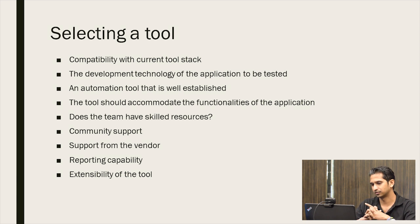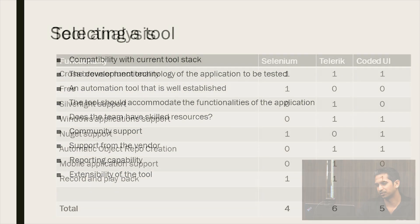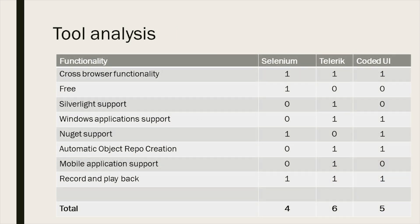There's another small thing you can do when selecting a tool — a comparison analysis. List out your required functionalities, then check whether each tool supports them. You can see at a glance which tool supports which functionalities and which tools you should select for your automation project. Do a comparison like this — it would be really helpful to choose a tool.